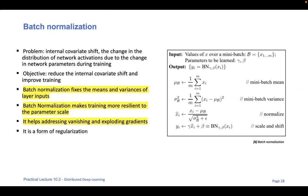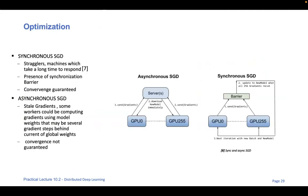Before finishing the first half of the lecture, I'll cover some techniques to deal with these issues. One commonly used technique is batch normalization: for each batch, you compute the mean and variance, then normalize by subtracting the mean and dividing by the standard deviation, regularizing the input and addressing the exploding gradients problem. That concludes the first half of the lecture — we'll take a short break and return for the second part.